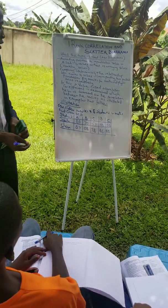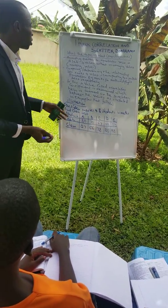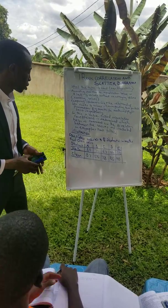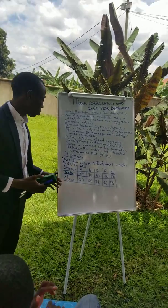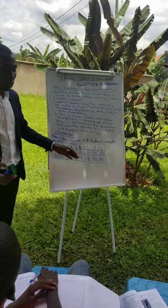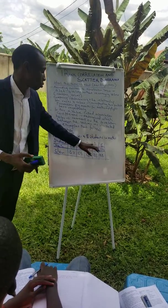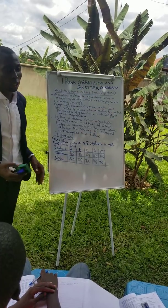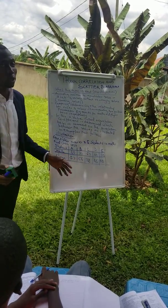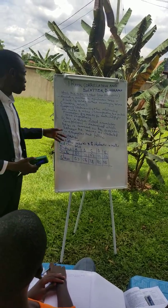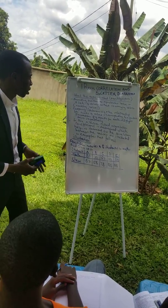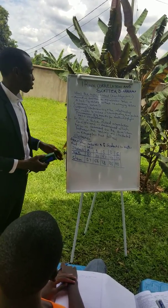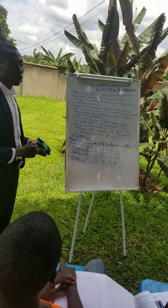Now when given such marks, this topic is going to guide you to determine how these marks are validated — how the performance of these students are related, what we call the correlation, the relationship between the performance. And we normally go ahead after awarding values, which we call ranks.